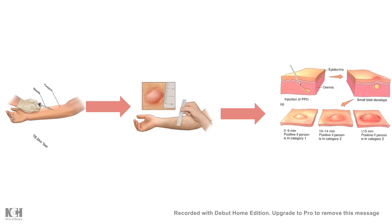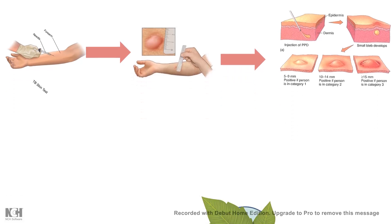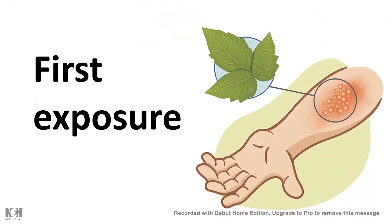At that time, how this process was happening was not known, but Koch named it the tuberculin reaction. Several years later, people figured out the mechanism. We will use another specific example: poison oak dermatitis, caused by poison ivy, which is also a classic example of Type 4 hypersensitivity.